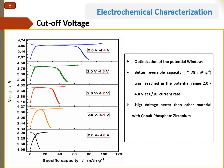Before starting the electrochemical tests, we decided to optimize the cutoff voltage. For that, we performed GCPL tests at different voltage ranges. We observe an increase of the capacity with the increase of the voltage. The better discharge capacity was obtained in the potential window between 2V and 4.4V.